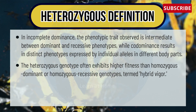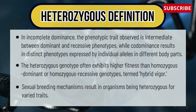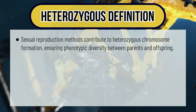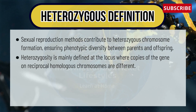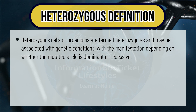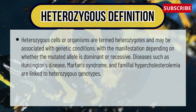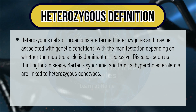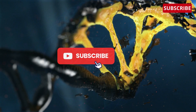In incomplete dominance, the genotypic trait observed is intermediate between dominant and recessive phenotypes, while codominance results in distinct phenotypes expressed by individual alleles in different body parts. The heterozygous genotype often exhibits higher fitness than homozygous dominant or homozygous recessive genotypes, termed hybrid vigor. Sexual reproduction mechanisms result in organisms being heterozygous for varied traits, ensuring phenotypic diversity between parents and offspring. Diseases such as Huntington's disease, Marfan's syndrome, and familial hypercholesterolemia are linked to heterozygous genotypes.